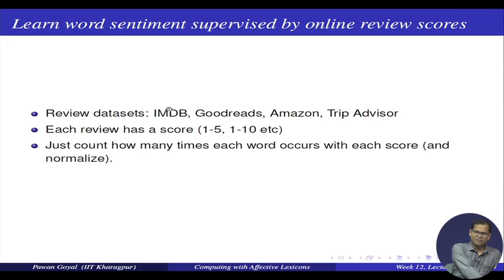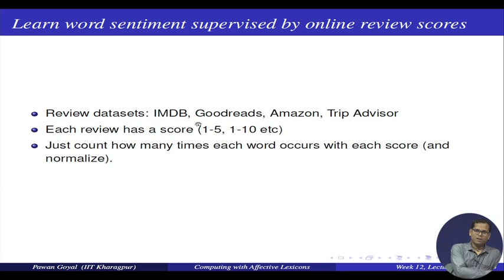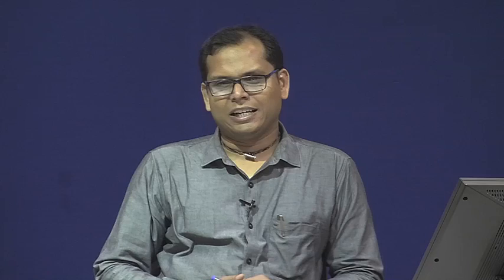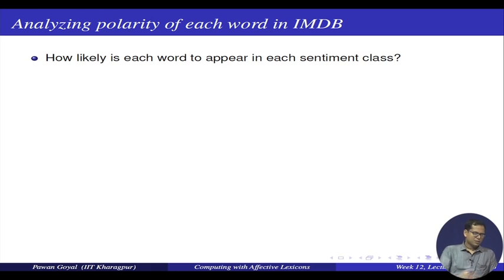You can start with any review dataset. For movies you can take IMDB, for books you can take Goodreads, for hotels you can take TripAdvisor, and for various products other websites. Different pages will have different ratings — somewhere one to five, somewhere one to ten. Now I want to find out how often a word occurs in a particular sentiment class or rating class.